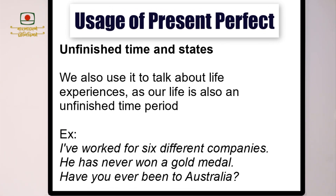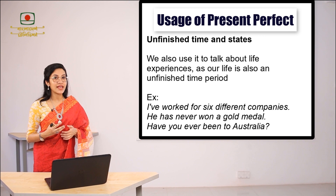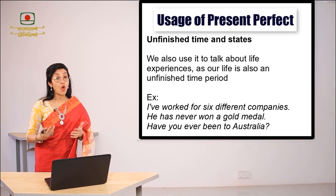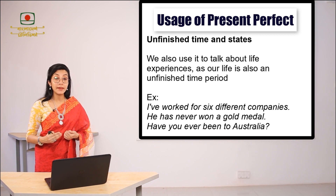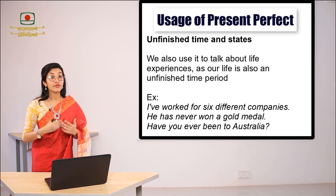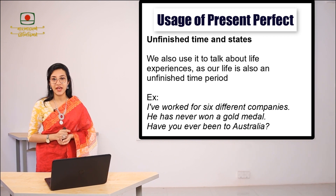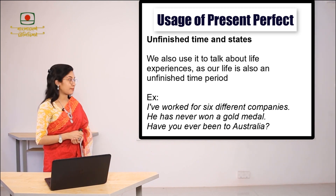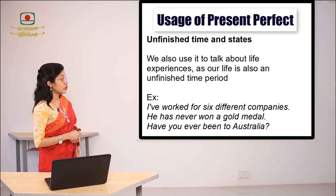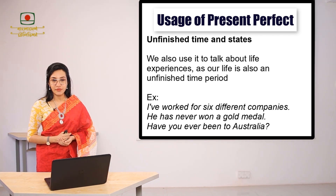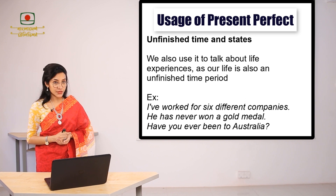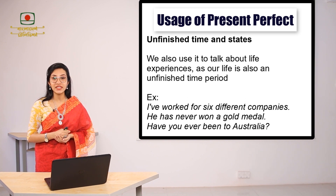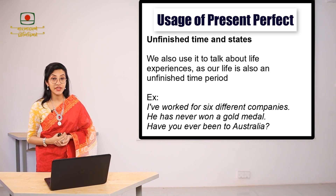For example: 'I have worked for six different companies' — I may still work in more companies in future, so the time is unfinished. 'He has never won a gold medal' — he hasn't won one yet, but there is a possibility he can in the future. 'Have you ever been to Australia?' — this refers to a life experience, so we use present perfect tense.